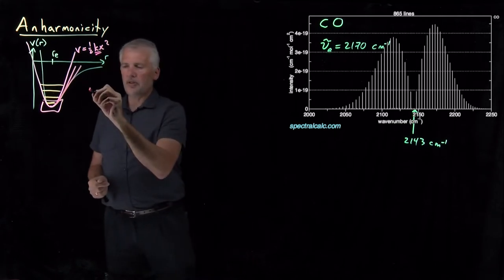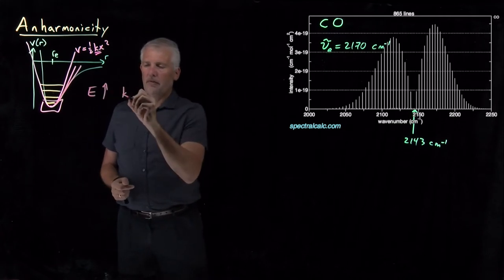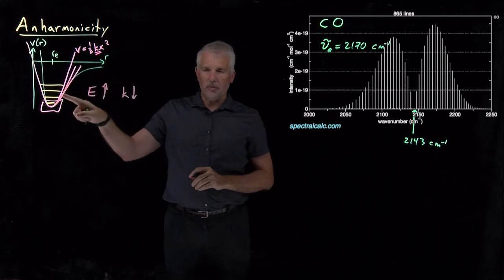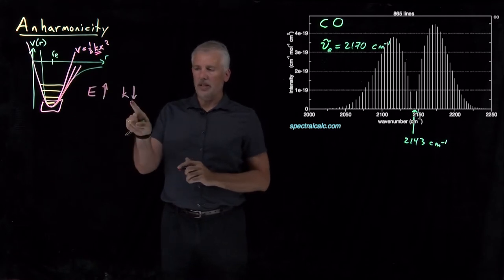So in other words, as the energy levels increase, the value of k that we should be using as our harmonic oscillator approximation to this well is going to decrease.